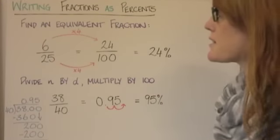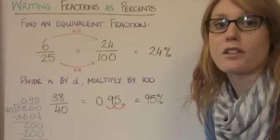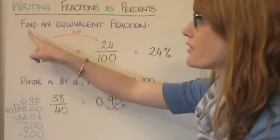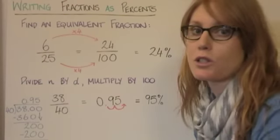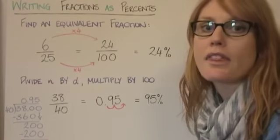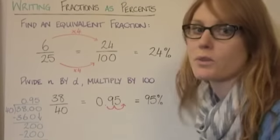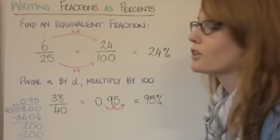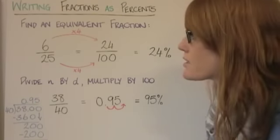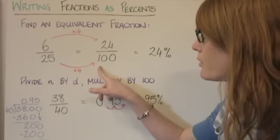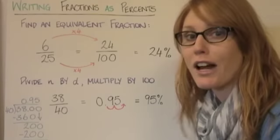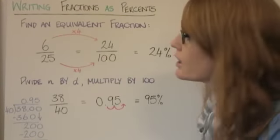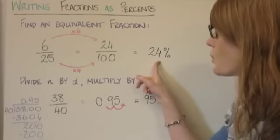Writing fractions as percents — there are two ways to do this. The first is by finding an equivalent fraction, which works well when the denominator is a factor of 100. For 6 over 25, since 25 goes into 100 four times, we multiply both the numerator and denominator by 4. So 6 times 4 is 24, giving us 24 over 100, which is 24%.